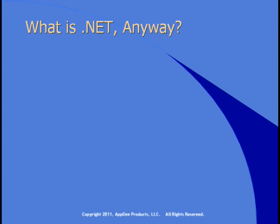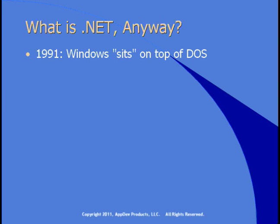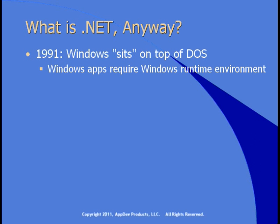Let's take a trip in the Wayback Machine. Back in the 80s, we all had personal computers that ran DOS, and we were happy with it. By the time Windows came out, we were ready for a graphical user interface. In the early 90s, when Windows finally became usable, Windows sat on top of DOS, and Windows apps required the Windows runtime environment in order to run. Apps like Microsoft Word required Windows, but lots of people didn't have Windows installed, so you could be running DOS and just install Windows long enough to run Word, then close it up when you were done.